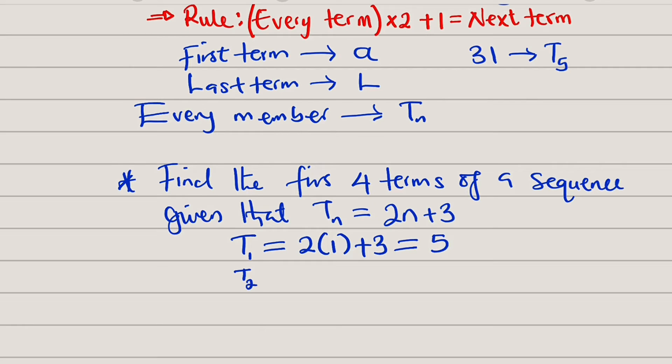Term number 2, which is T2, will be equal to 2 multiplied by 2 plus 3. This is equal to, 2 multiplied by 2 is equal to 4. And 4 plus 3 is equal to 7. So, the second member is 7.